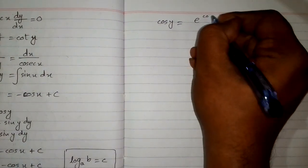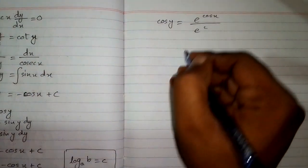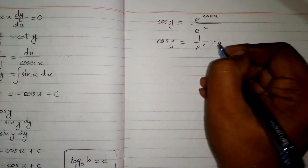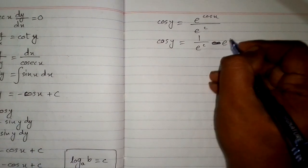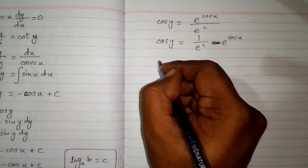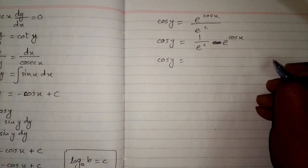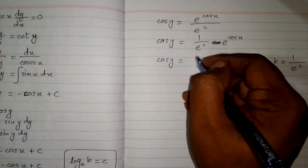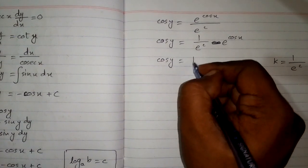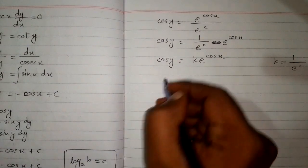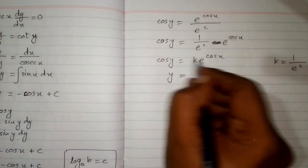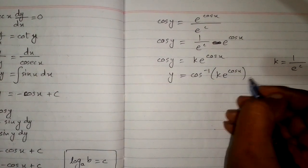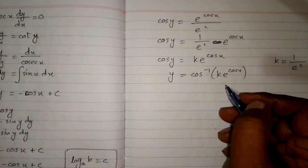Now e to the power cos x upon e to the power c can be written as 1 upon e to the power c, multiplied by e to the power cos x. Letting k equal 1 upon e to the power c, we have cos y equals k times e to the power cos x. Taking the inverse cosine of both sides, y equals inverse cos of k times e to the power cos x. This is the required solution of the given differential equation.